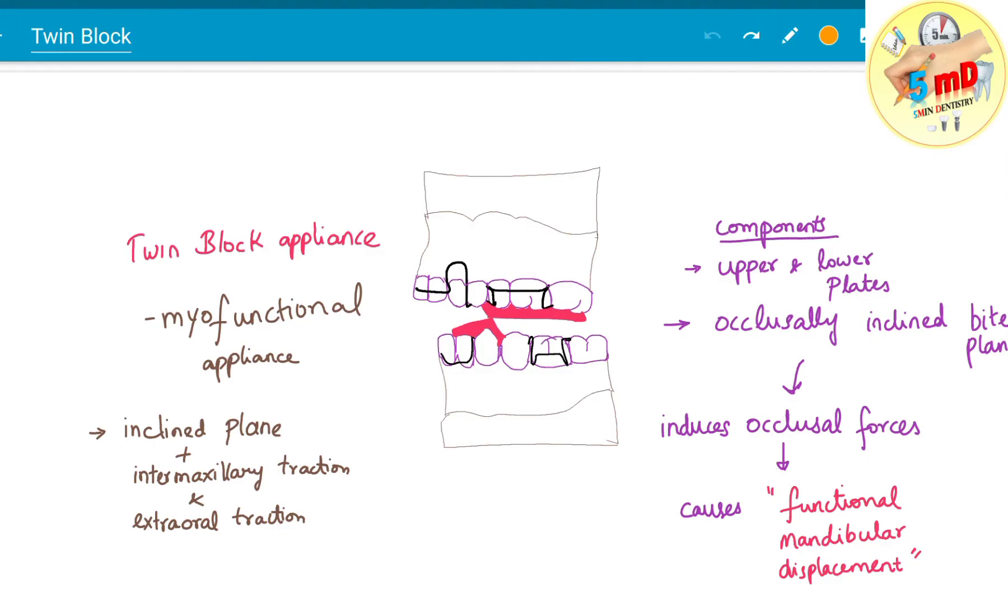So what is a myofunctional appliance? The myofunctional appliance works by using the facial muscles and the masticatory muscles to produce changes in the relation of teeth and arches.